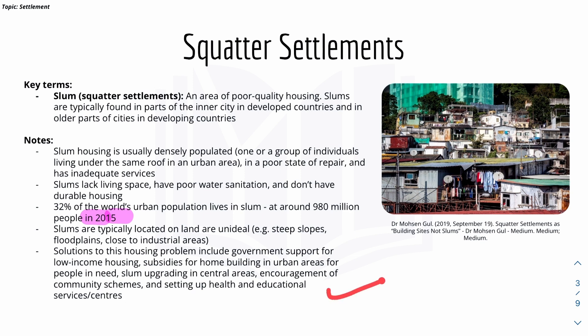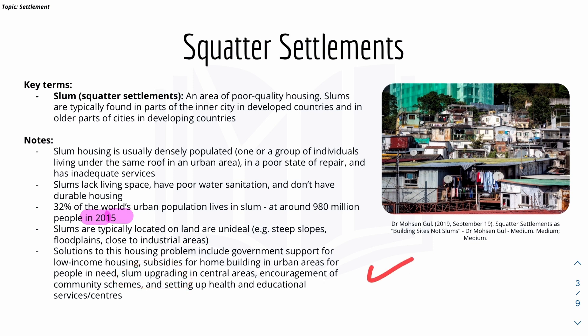Solutions to squatter settlements include government support for low income housing, subsidies for home building in urban areas for people in need, and slum upgrades to improve water sanitation and provide better electricity.